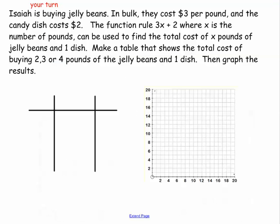Now let's look at a word problem. You have this word problem on your notes — this is your last one. Isaiah is buying jelly beans. In bulk, they cost $3 per pound, and the candy dish costs $2 — that's a one-time charge. The function rule is 3x plus 2. I gave you the function rule, so now you need to take that rule and put it in the middle there. Where x is the number of pounds. Make a table that shows the total cost of buying 2, 3, or 4 pounds of jelly beans — so those are my x values.